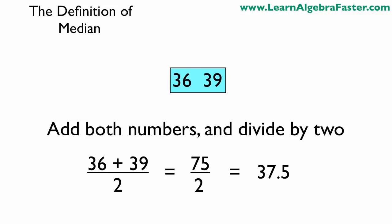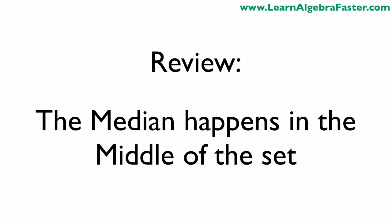In review, the median happens in the middle of the set of numbers. When there's an odd number, it's easy—we just choose the one in the middle. But when there's an even amount of numbers, we have to do a small calculation and split the difference between those two values to get our median.